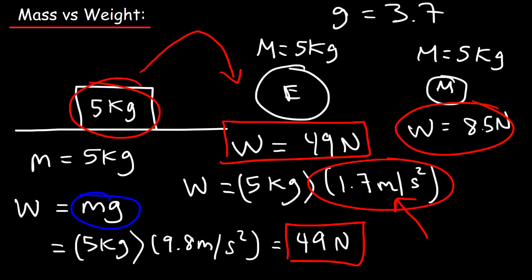So remember, the weight changes based on the planet you're on. The weight of the object will not be the same. However, the mass of the object doesn't change based on the planet that you're standing on. The mass will remain the same. The number of atoms in this 5 kilogram block is not going to change if you take it from the Earth and transport it to the Moon. However, the weight force will change.